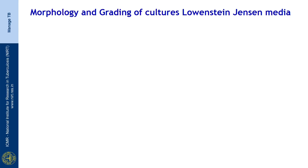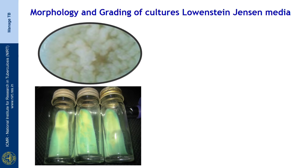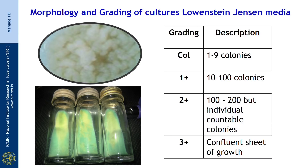Looking at morphology and grading of cultures using Lowenstein-Jensen media: classically, the morphology is described as rough, tough, and buff — rough in appearance, buff colored (a semi off-white or dirty white color), and tough to emulsify. For reporting culture results: when 1 to 9 colonies are observed, the actual number is reported. When 10 to 100 colonies are seen it is reported as 1+. When 100 to 200 colonies are seen it is 2+, and when a confluent sheet of growth is seen the culture is reported as 3+.